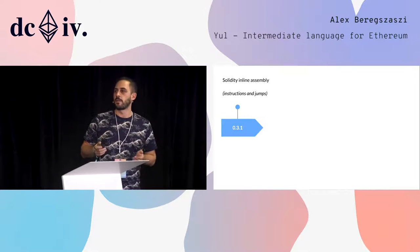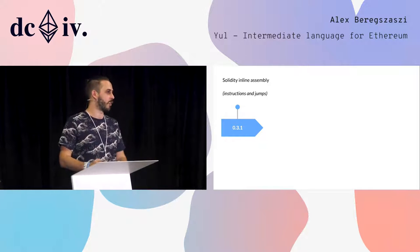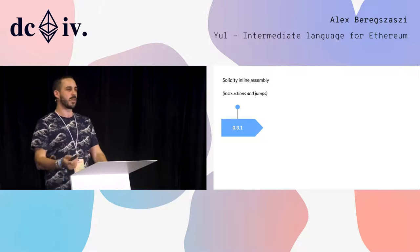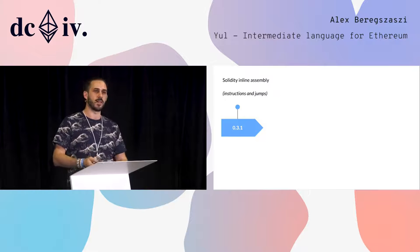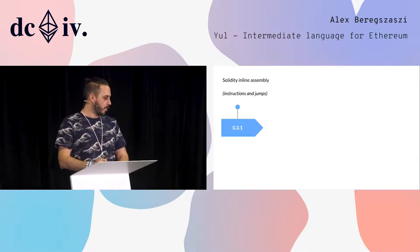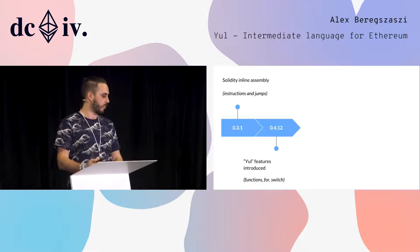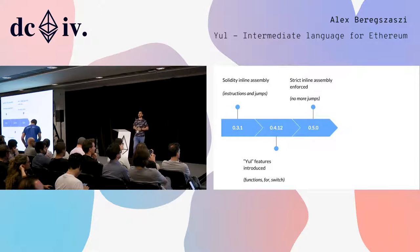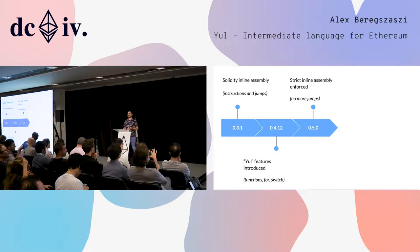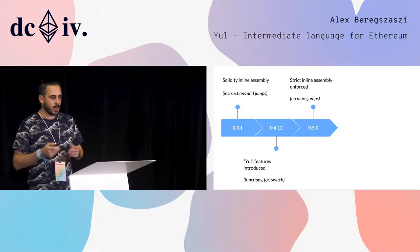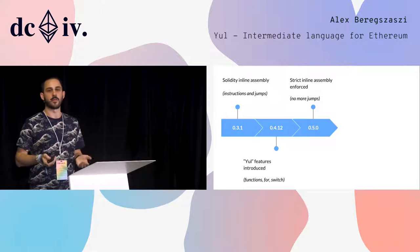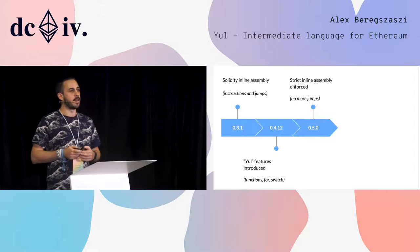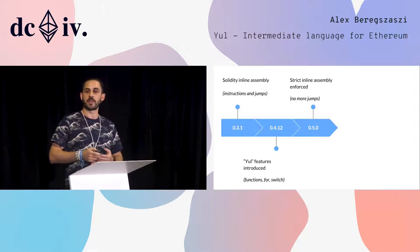Yul originates from the Solidity inline assembly, which you're probably familiar with because it can be used within Solidity. This inline assembly was introduced about two years ago — it had instructions and jumps, and did have variables, but didn't have all these nice features I explained. These features — functions, for, and switch — were introduced about a year ago and have been usable since. Even though in inline assembly there was a single version presented to users, in the backend we had three different versions, all accessible through the Solidity compiler's assembler mode.